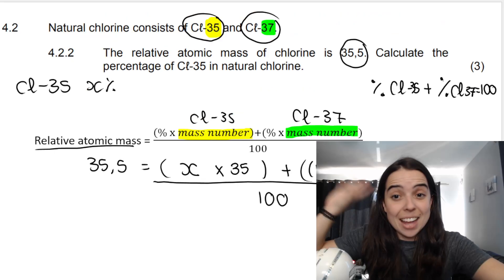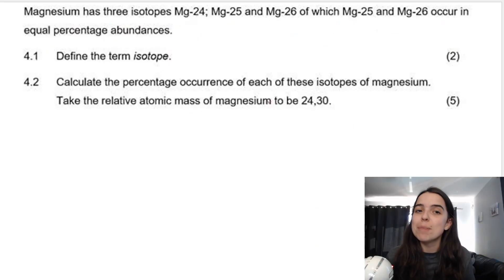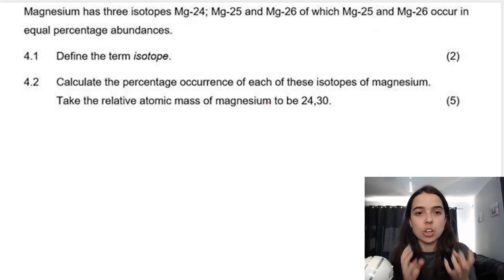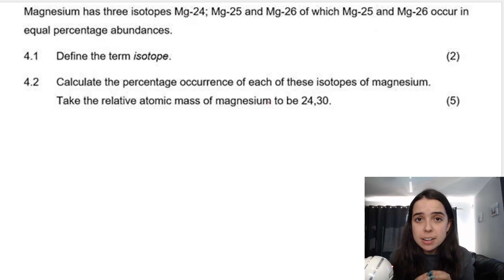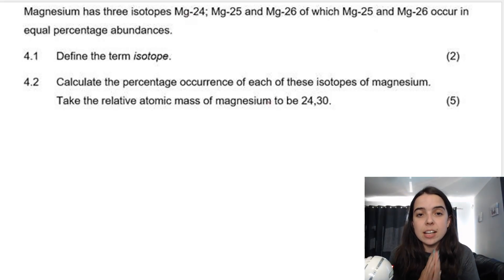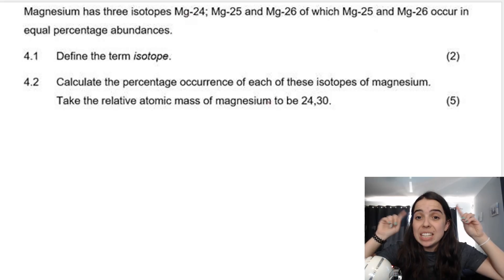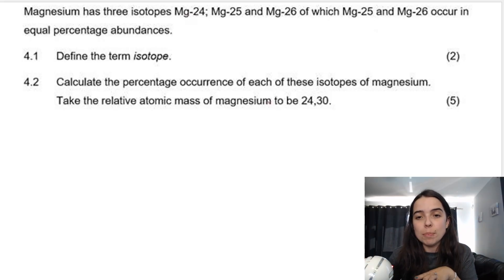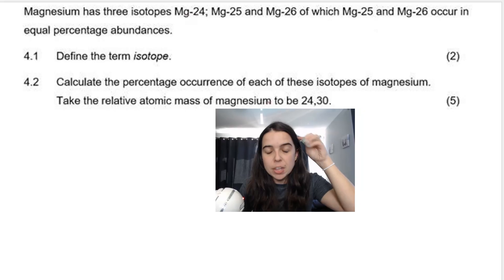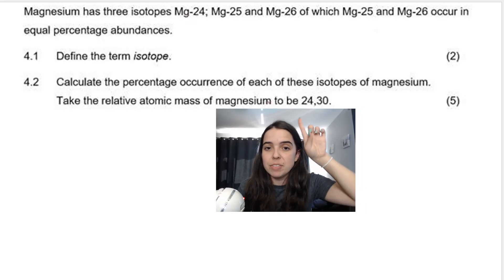This question: magnesium has three isotopes — Mg24, Mg25, and Mg26. Mg25 and Mg26 occur in equal percentage abundances. They ask us to calculate the percentage occurrence, basically the percentage abundance, of each of these isotopes, and they tell me to take the relative atomic mass of magnesium to be 24.3.